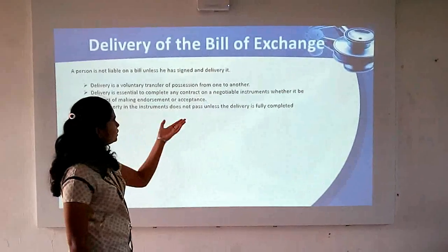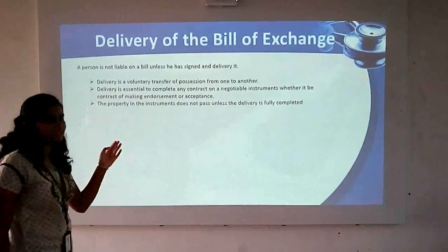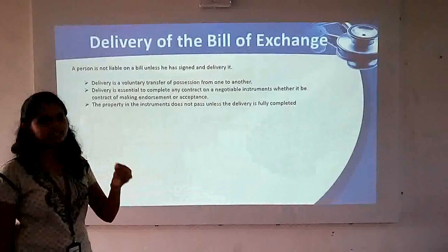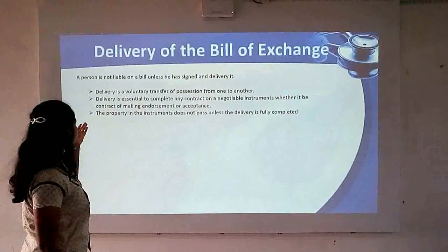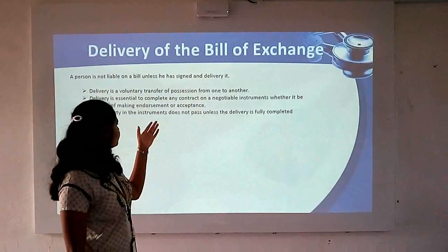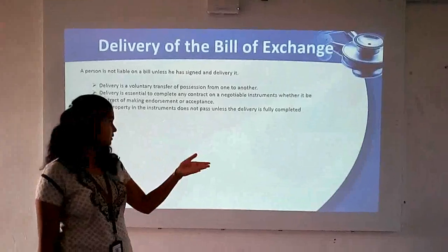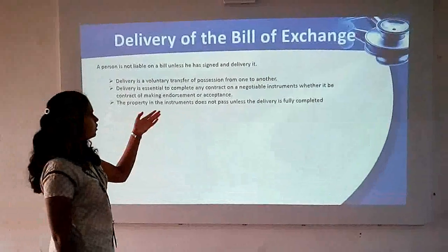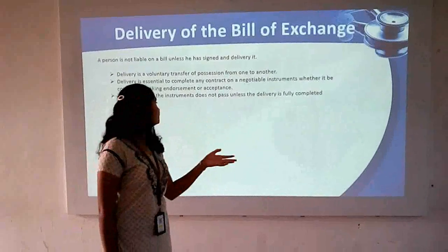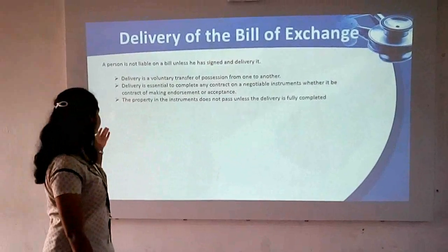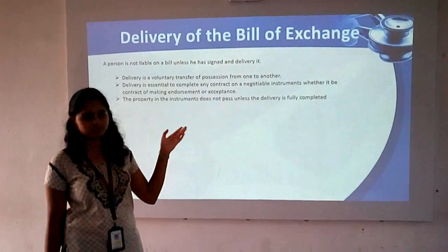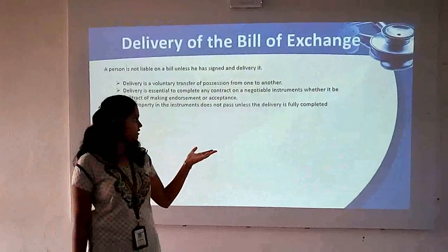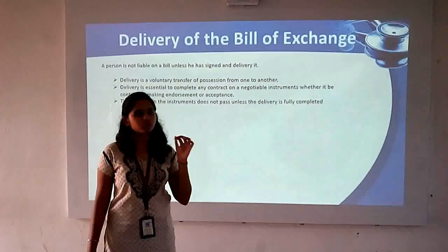Next is the delivery of the bill of exchange. A person is not liable on the bill unless he has signed and delivered it. First, delivery is a voluntary transfer of possession from one person to another. Next, delivery is essential to complete any contract on a negotiable instrument, whether it is the drawing, endorsement, or acceptance. Lastly, regarding property — the instrument does not pass unless the delivery is fully complete.